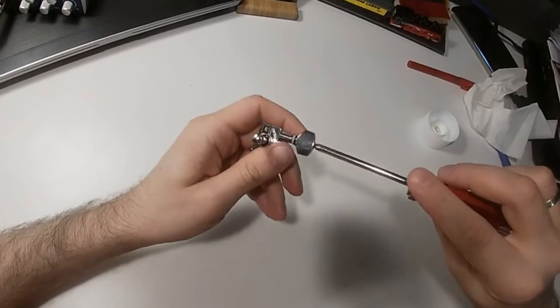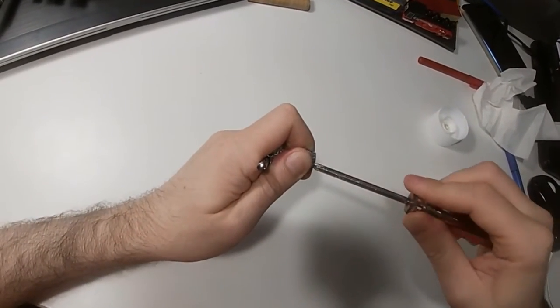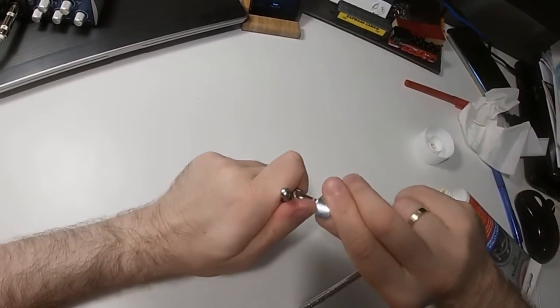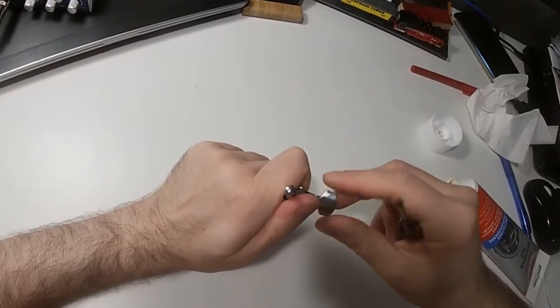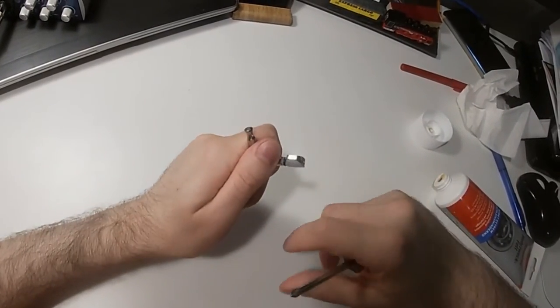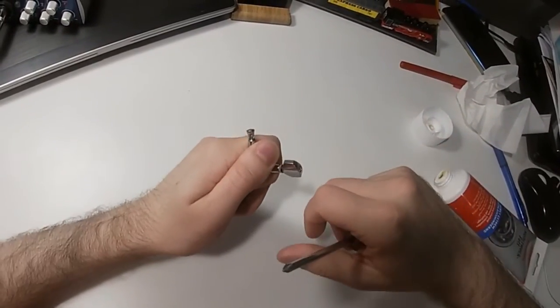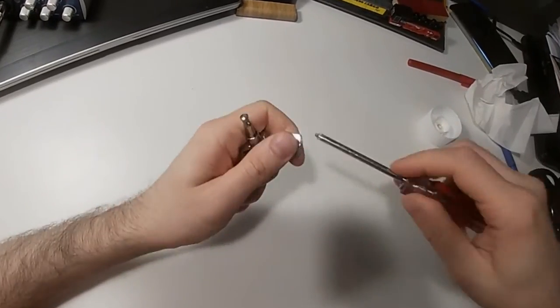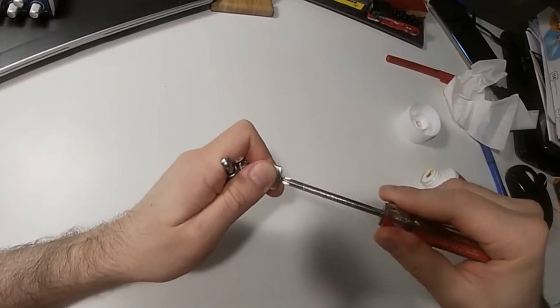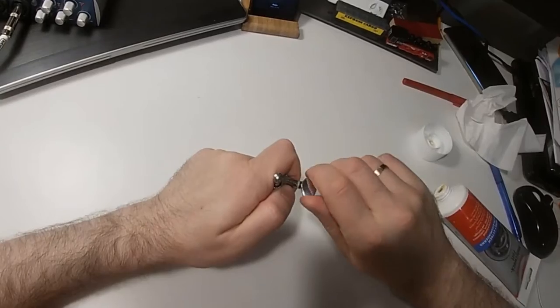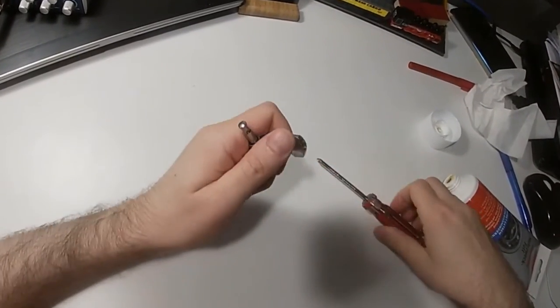By tightening this small screw more, it will rotate harder and won't be affected if you randomly touch it. Or you can loosen it and the tuner will rotate very easily.